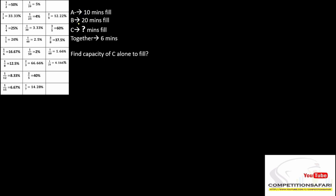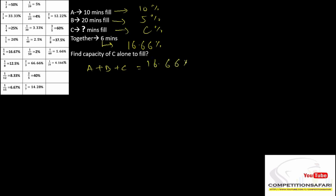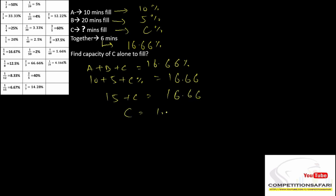Next question: tap A can fill the tank in 10 minutes, tap B can do it in 20 minutes, and we don't have the value for tap C. All together, they can fill in 6 minutes. We have 10 minutes as 10%, 20 minutes as 5%, and the unknown value as C%. Together they fill the tank in 6 minutes, which means 16.66%. So A plus B plus C equals 16.66%. That gives us 10 plus 5 plus C = 16.66, so 15 plus C = 16.66, and C = 1.66%.